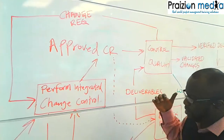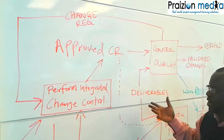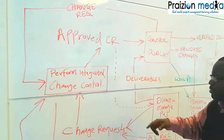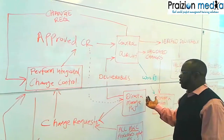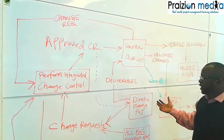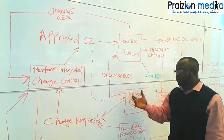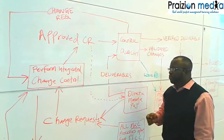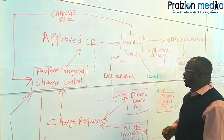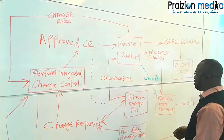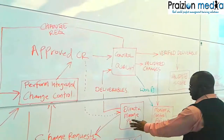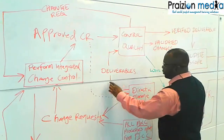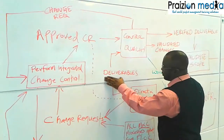We're going to cover change requests and how they flow into Perform Integrated Change Control. We're also going to take a look at how deliverables become inputs to Control Quality. Let's start with the idea that Direct and Manage Project Work produces an output called deliverables.